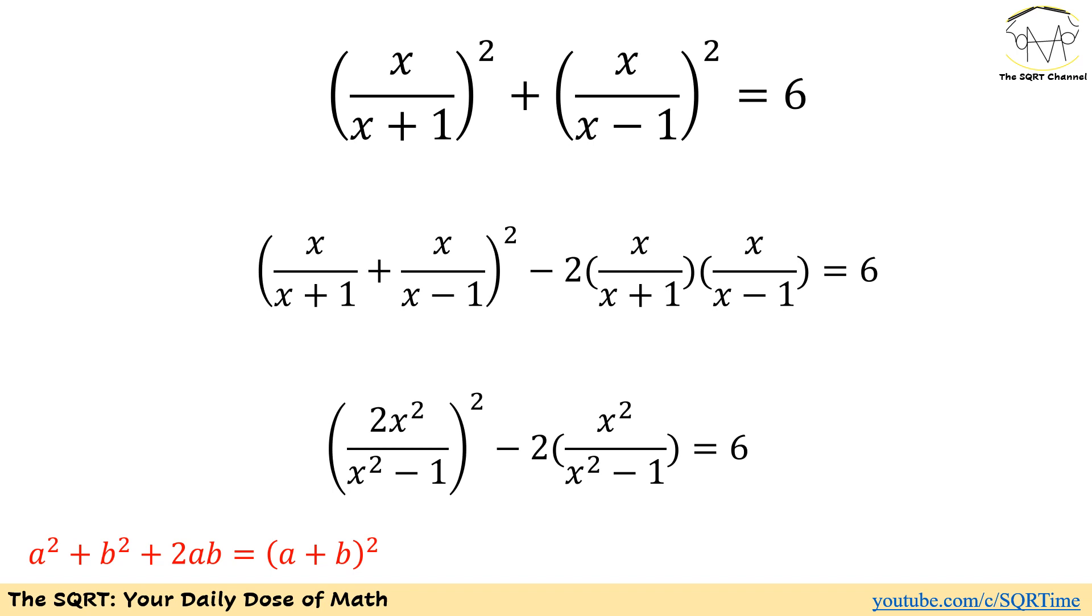Now if we simplify it we are going to have 2 times x squared over x squared minus 1 to the power of 2 minus 2 times x squared over x squared minus 1 is equal to 6.